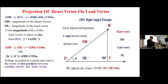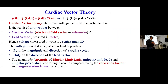Regarding the projection of heart vector and lead vector: if you drop a perpendicular from the tip of the heart vector reaching point B, OV is the voltage recorded in that particular lead, where OV equals OH·cosα. The Cardiac Vector Theory, proposed by myself, states: H·L = OH·cosα. The voltage recorded in a particular lead is a result of the dot product between the cardiac vector, measured in electrical field vector units of volts per meter, and the lead vector measured in meters. Since voltage is a scalar quantity, it depends on both the magnitude and direction of the cardiac vector and only on the direction of the lead vector.